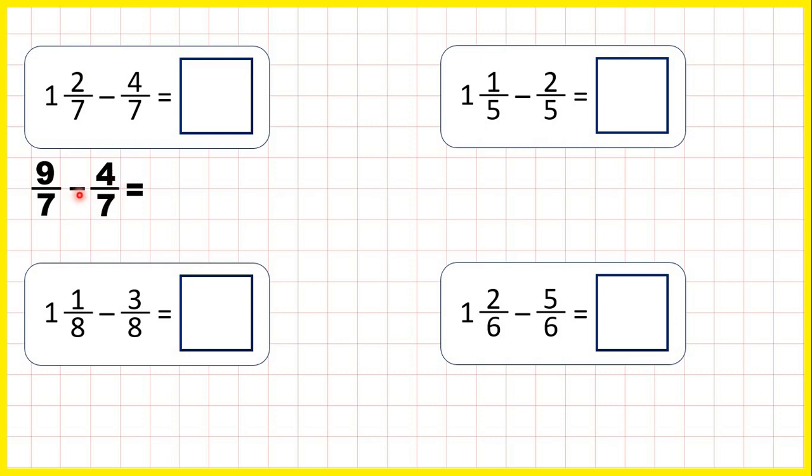So now we can subtract four-sevenths. Remember, when we're subtracting fractions with the same denominator, the denominator stays the same in our answer, and now nine minus four is five, so our answer is five-sevenths.